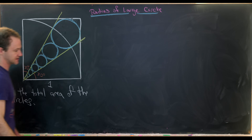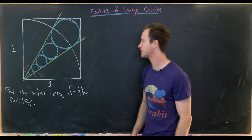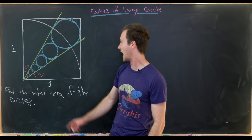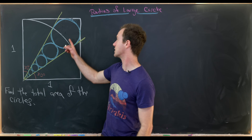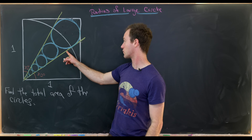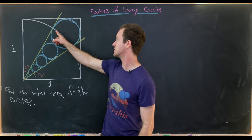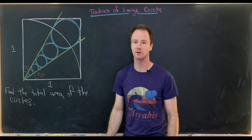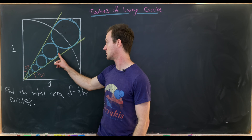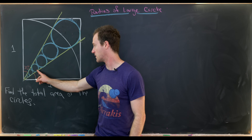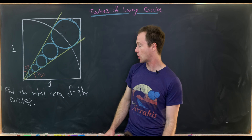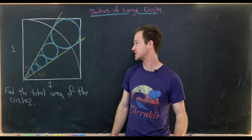That means that this angle in the middle is another 30 degrees. Next up we're going to inscribe a circle up in the top right, and because of these angles down here this inscribed circle will intersect with the rays at the same place that it intersects with this quarter circle. Then below this circle we'll inscribe another circle, and then another circle, and another circle infinitely down. Our goal is to find the total area of all of these circles.